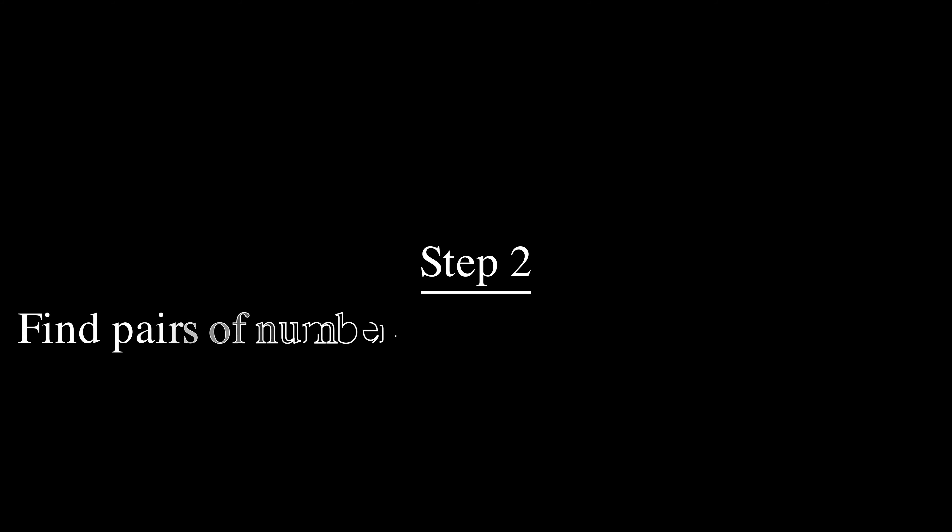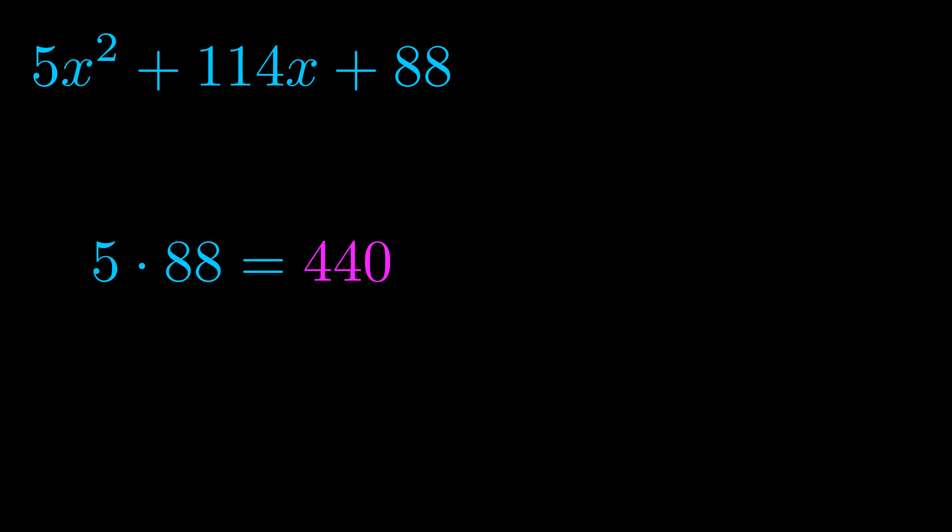Step two is to try to find all of the pairs which multiply to this number. Now turns out you don't really need to find all of them but go ahead and write down as many numbers as you can that multiply to the magenta value for now. Pause the video and resume when you're ready to continue.